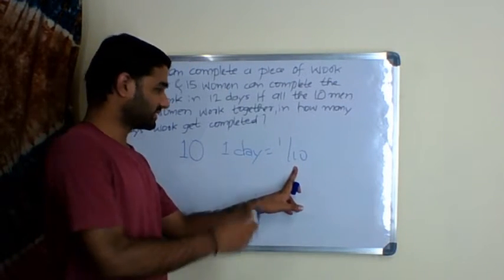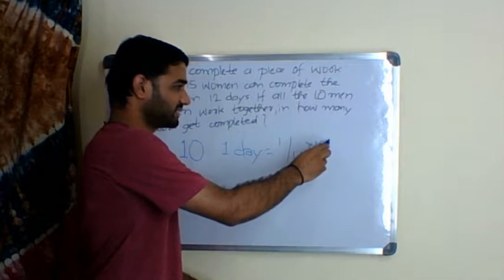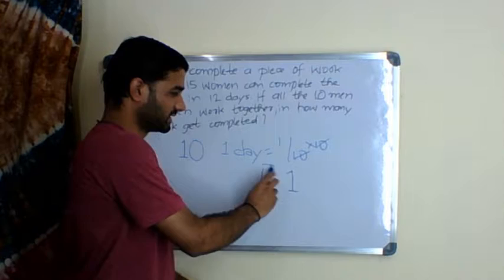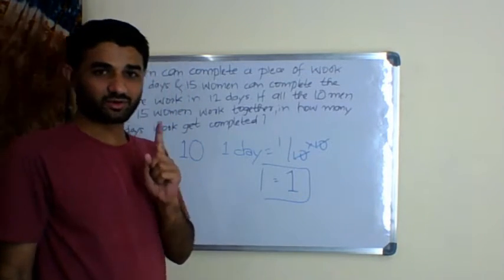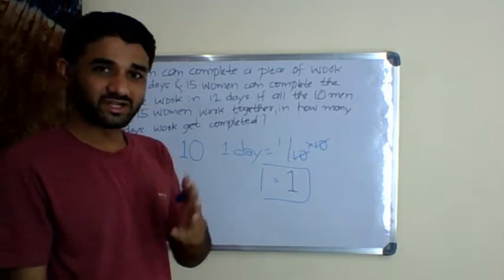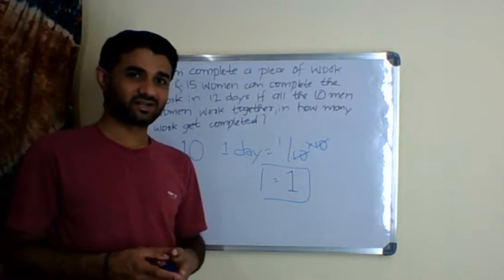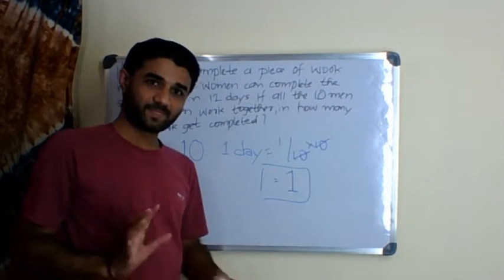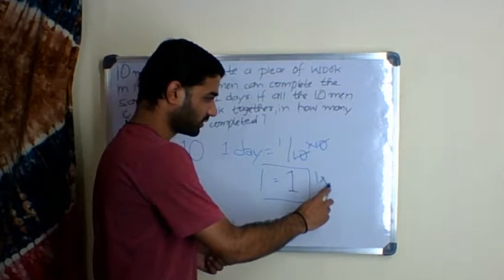In other words, take this 1 by 10, and since they are working for 10, if you multiply it by 10, 10 and 10 get cancelled and what remains is 1. This is what I mean by unit or unity or unit quantity.